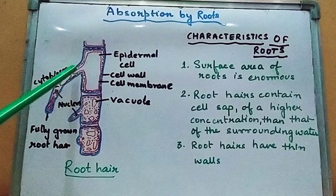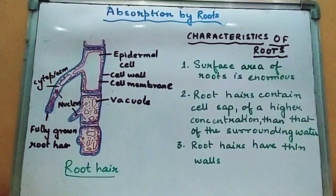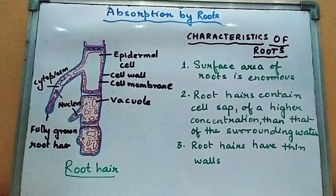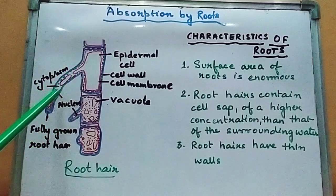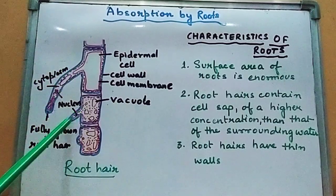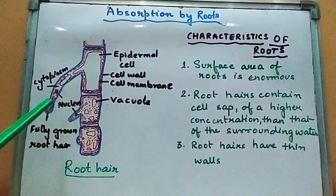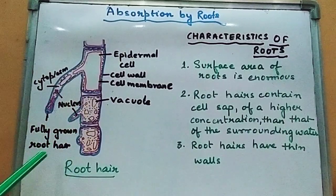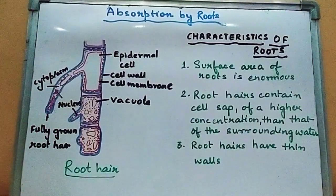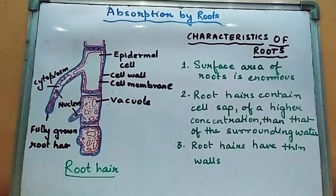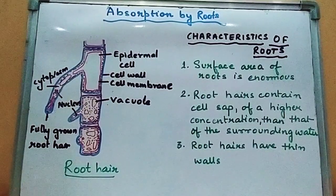The round structure is the nucleus and the jelly matrix is called cytoplasm. This is the structure of the root hair extension — the fully grown root hair — and the immature ones which have just started growing from the epidermal cells of the roots. Root hairs have certain characteristic features which help in the absorption of water.